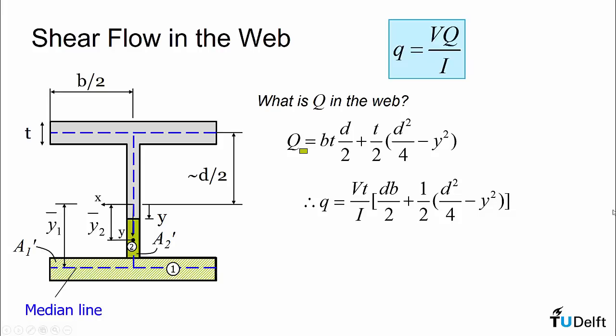Now what we can recognize from this is this expression is parabolic. It varies with y squared and it varies from a maximum at the neutral axis and it decreases as we go away from the neutral axis.